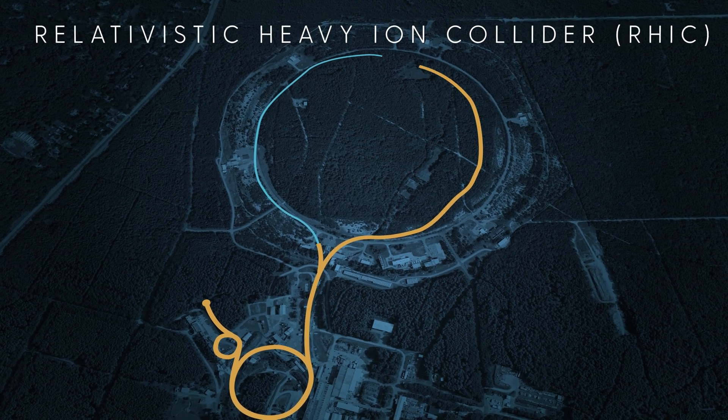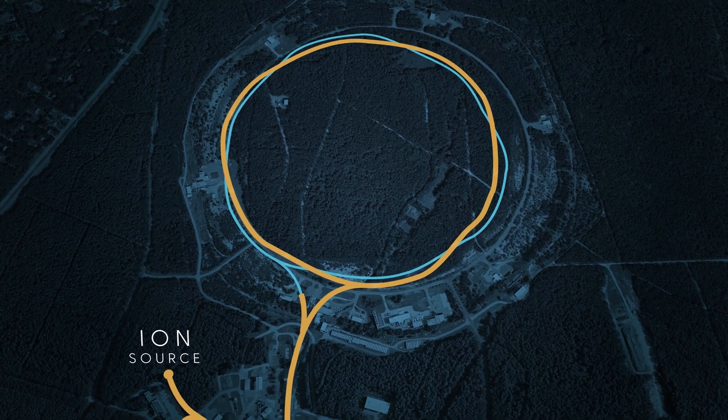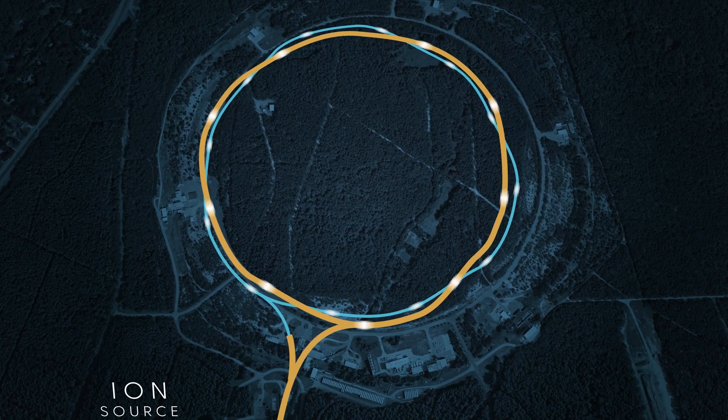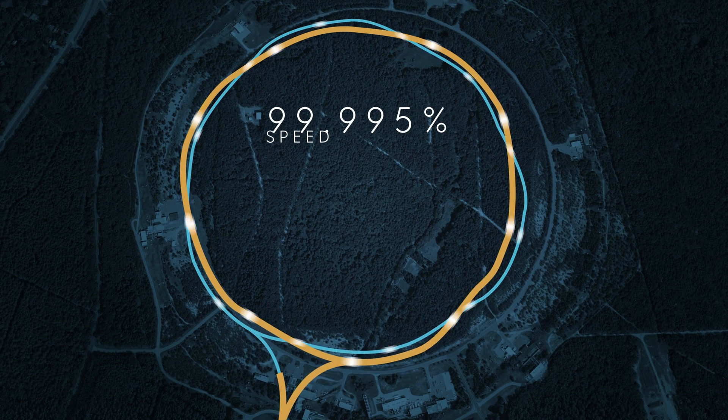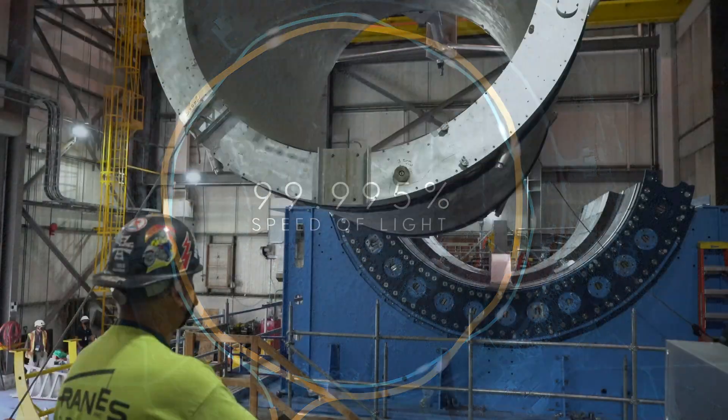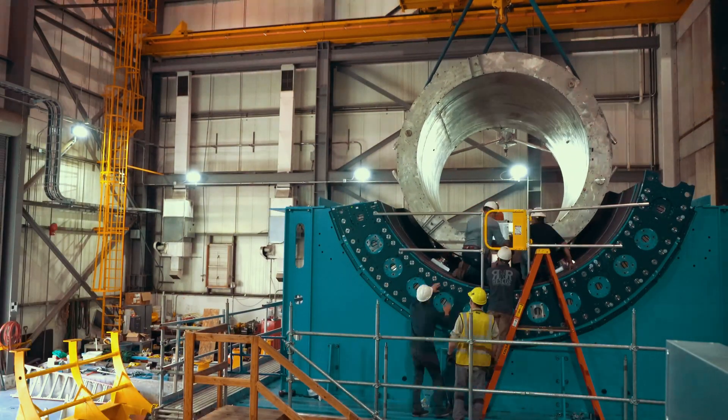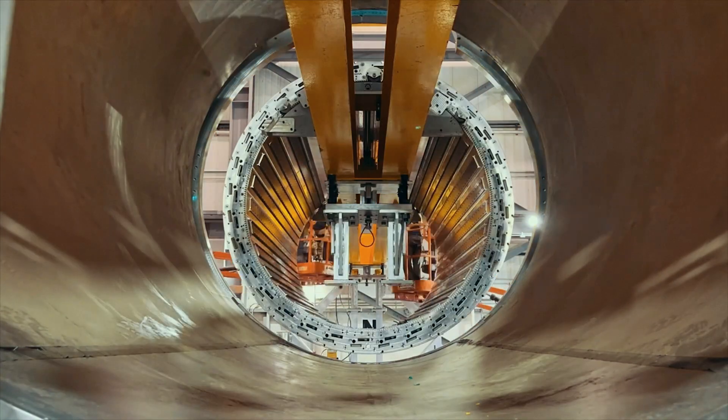RIC's 2.4-mile-long ring speeds atomic nuclei around its massive circle 80,000 times a second at 99.995 percent the speed of light. They are steered in this ring by massive superconducting magnets cooled down to near absolute zero.